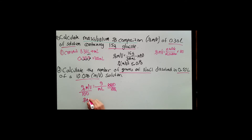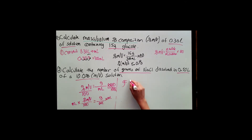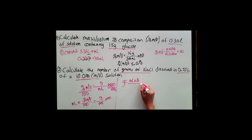So what this looks like is: percent mass-volume divided by 100 equals grams divided by milliliters. I need grams by itself, so to get rid of milliliters in the denominator, I multiply both sides by milliliters. On the right side the milliliters cancel, giving me a new equation where grams equals milliliters times the percent — in this case 10 — divided by 100.